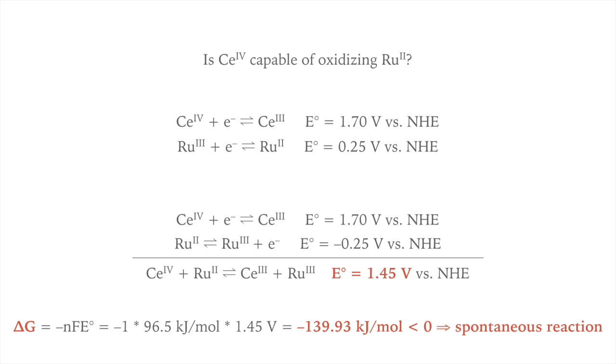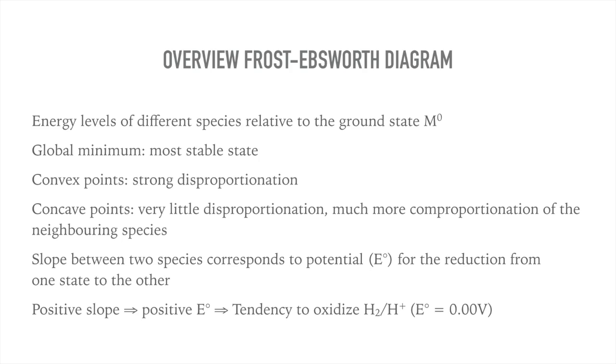You can calculate this if you don't believe me. You will find though that the potential of this whole process is positive and therefore the ΔG is negative. The process takes place spontaneously. Here you can see again the most important messages of the Frost diagram. The last point is very important.